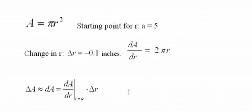And lastly, we need the definition of the differential, and here it is. We say that the change in the area, delta A, is approximately dA, the differential of A. And the differential of A is the derivative of A with respect to r, which is the area's rate of change, evaluated at the starting point a, times the change in r, delta r.